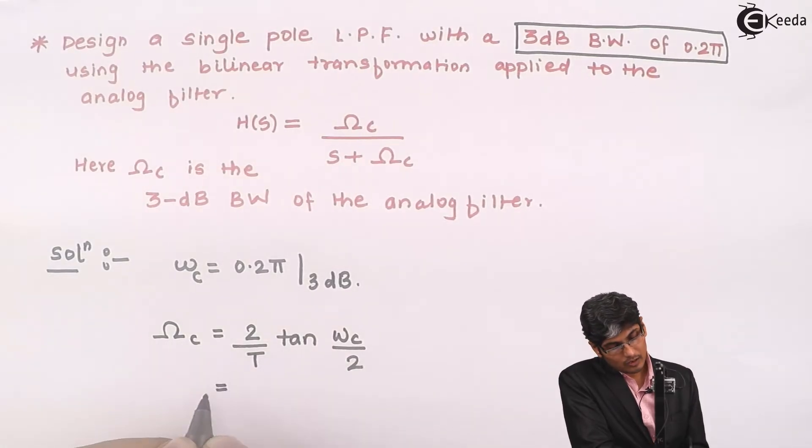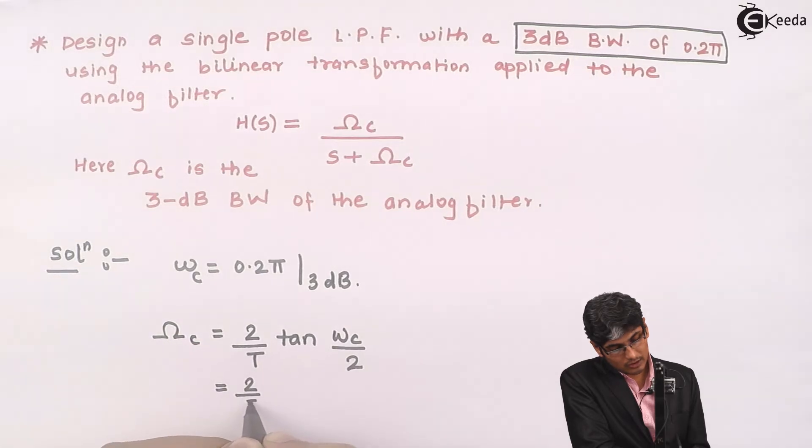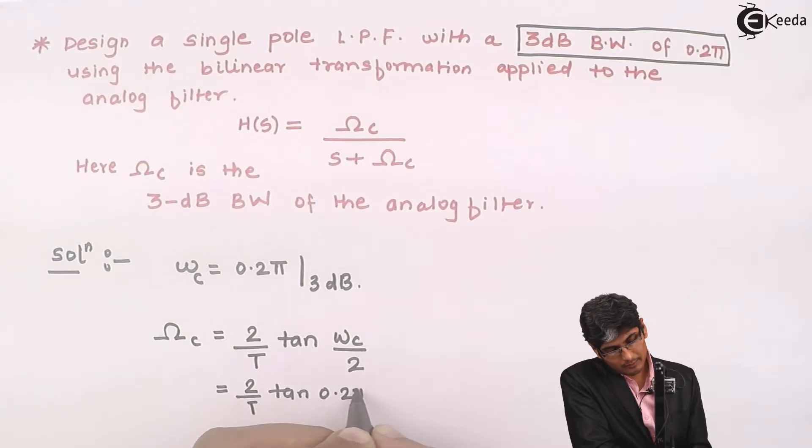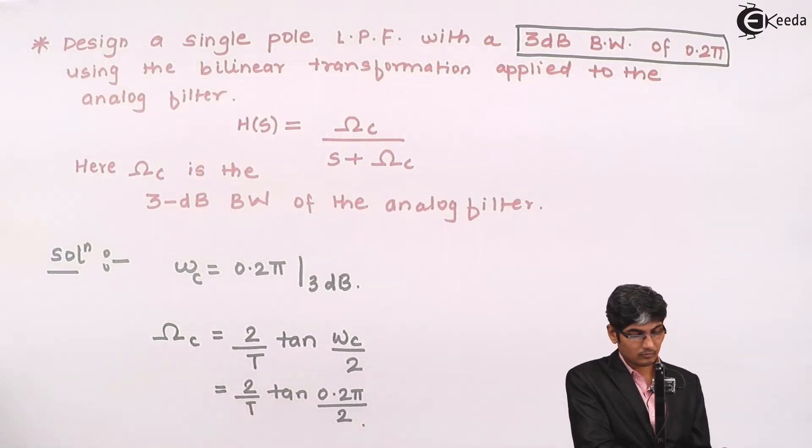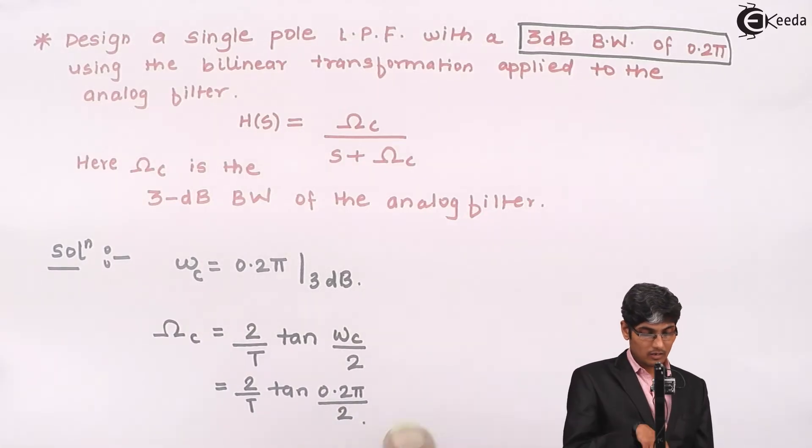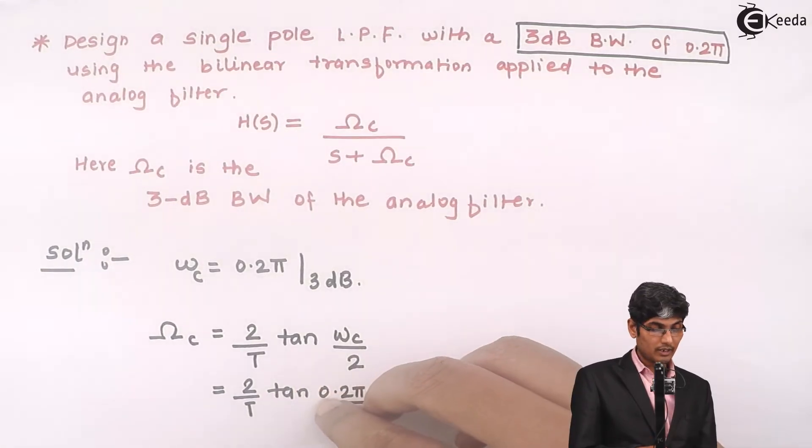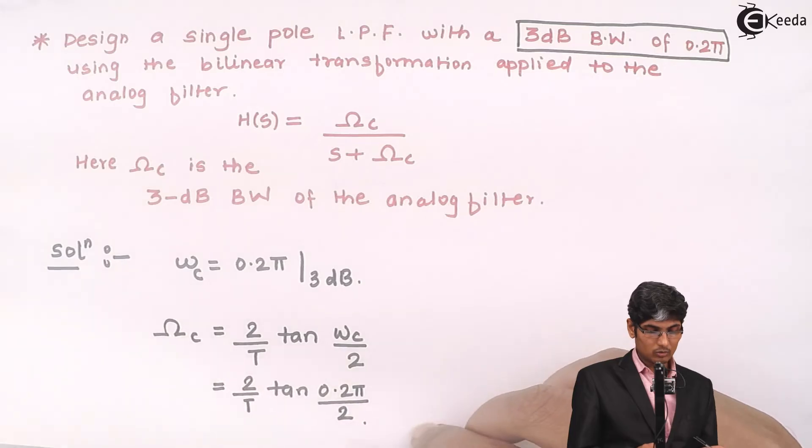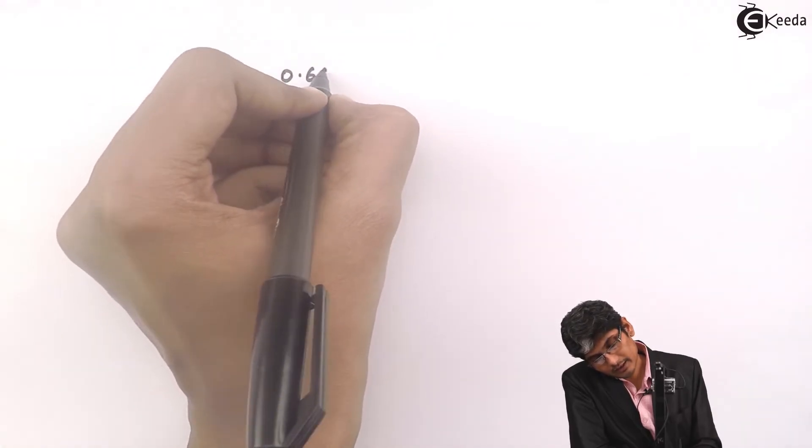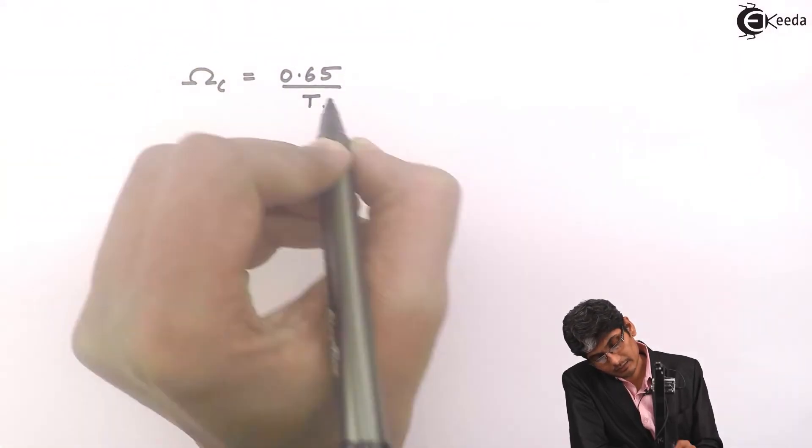If you substitute ωc here, it would be (2/T) times tan(0.2π/2), which will give me the value of this ratio as 0.65. So I will get Ωc = 0.65/T.